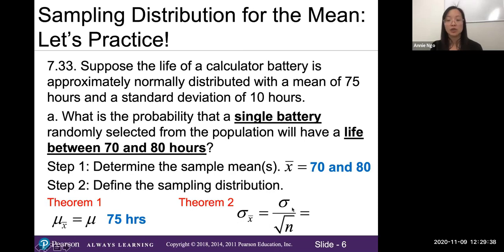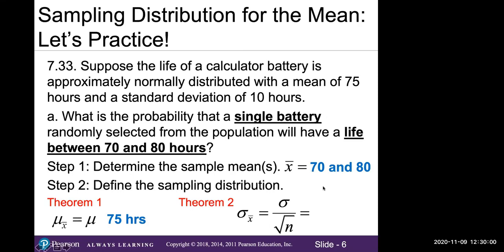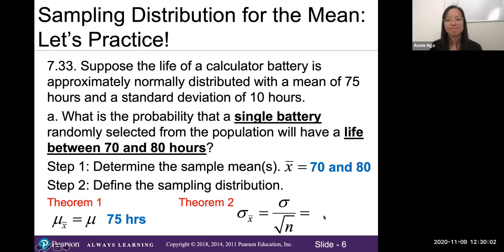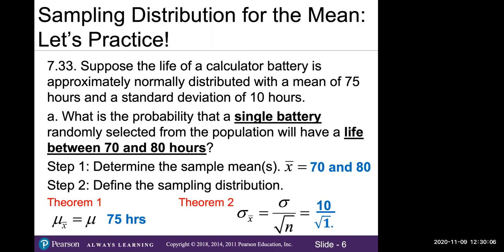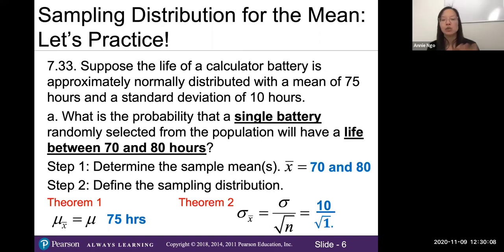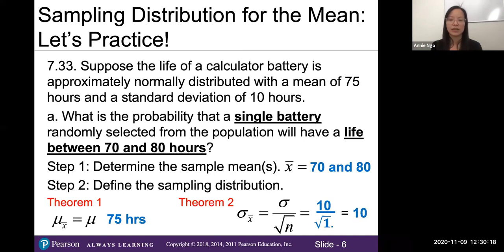Theorem two gives us the standard error: we take our population standard deviation and divide it by the square root of n (our sample size). The standard deviation from the story is 10, and our sample size is just one battery. So our standard error is 10 divided by the square root of 1, which equals 10.